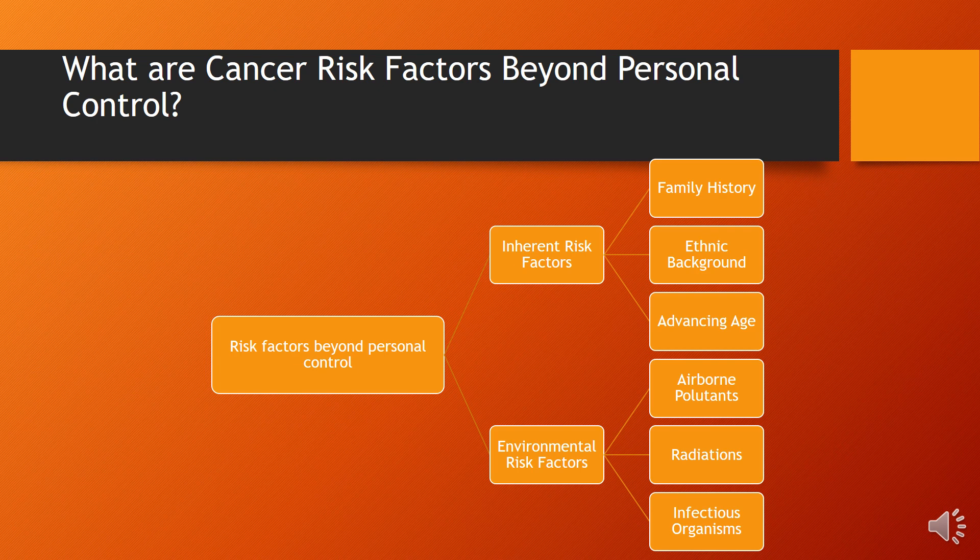Ethnic background is also a risk factor — there are certain regions, localities, and ethnicities in which the mortality from cancer is much higher. For example, African-Americans have a significantly higher rate of experiencing and dying from cancer. Advancing age is one of the most important mortality risk factors for cancer, though it is not the only factor, as we also see young people nowadays experiencing different types of cancer.